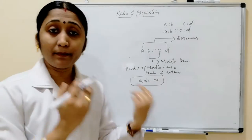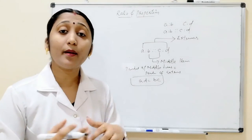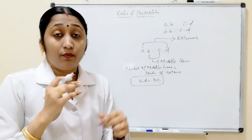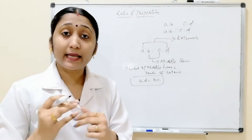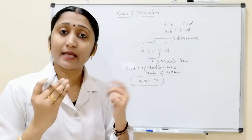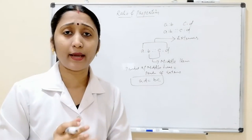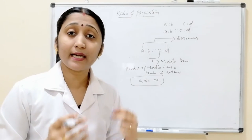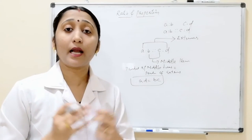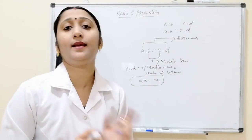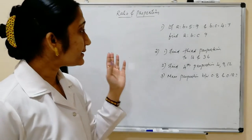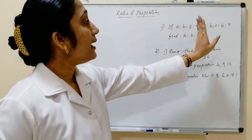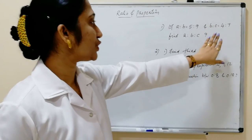These are the basic things about ratio and proportion. As we go into the problems, I will show you some tricks and tips. Make sure to watch the entire video. For example: if A:B = 5:9 and B:C = 4:7, find A:B:C.